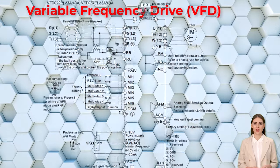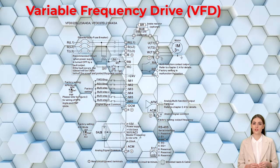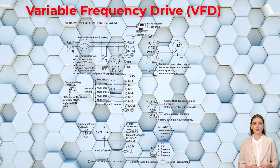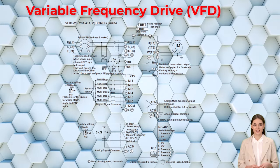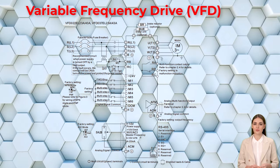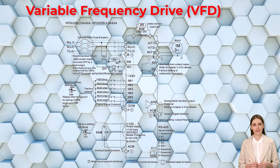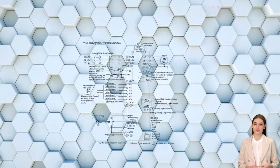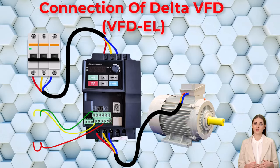Let's look at the power and control connections of a VFD with an induction motor. First, check the manufacturer's catalog carefully — here we are using the Delta VFD-EL. For power connections, three-phase supply is applied to terminals R, S, and T. The output terminals U, V, and W are connected to the induction motor. Connect the VFD to the induction motor following these instructions.